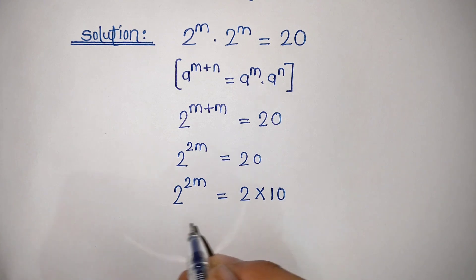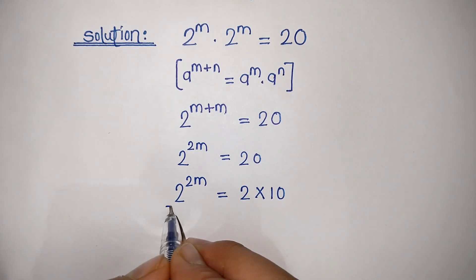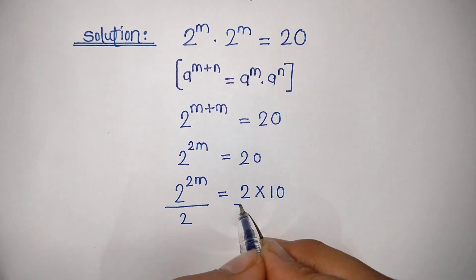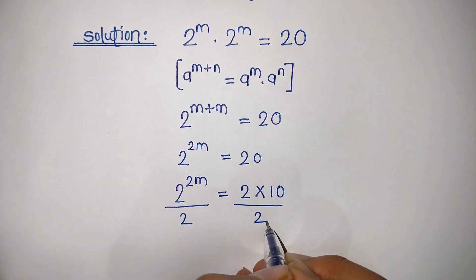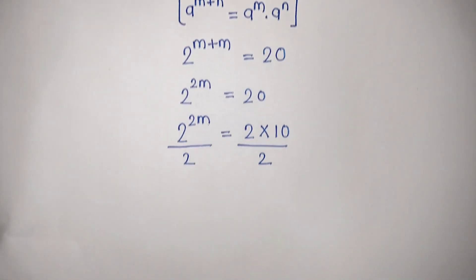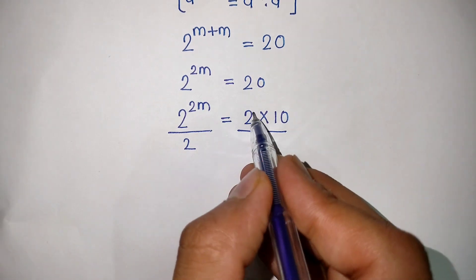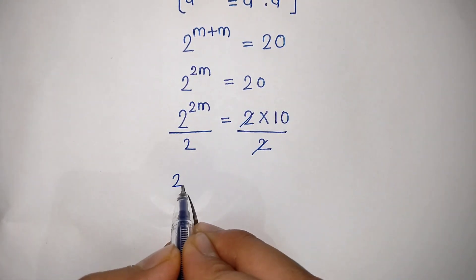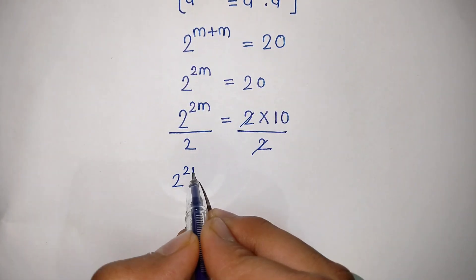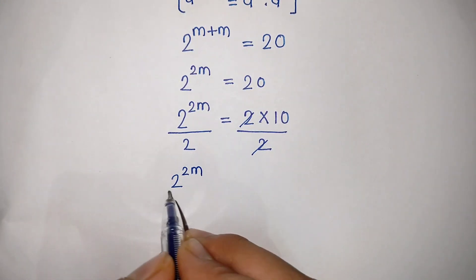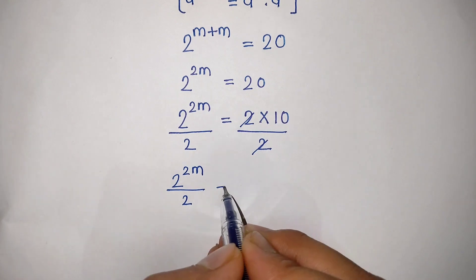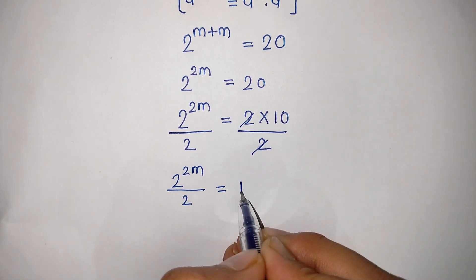Now divide both sides by 2. This 2 and 2 get cancelled. So 2 to the power 2m divided by 2 is equal to 10.